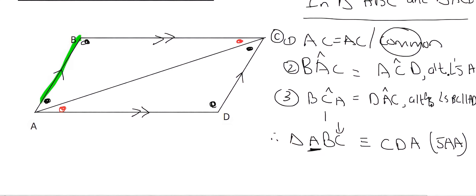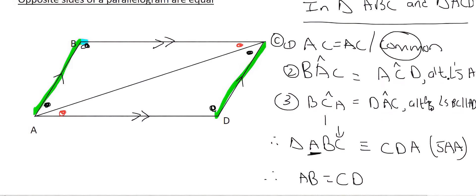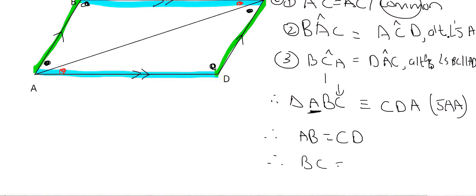That means that BA is going to have the same length as CD. So we can say therefore AB is going to have the same length as CD. And it also means that this length over here is the same as this length over here. So we can say BC is the same as AD.